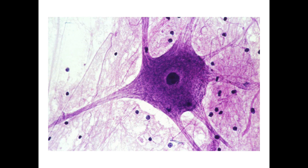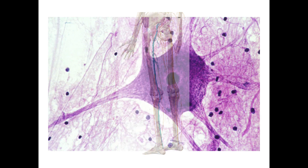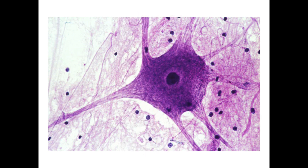The longest axon or nerve fiber in the human body is the sciatic nerve, which extends from the base of the lumbar spine all the way down to the toes. That's pretty much the major points we want to cover on this particular slide.